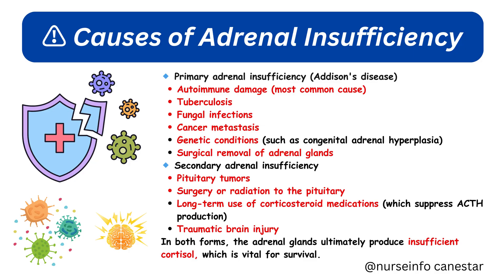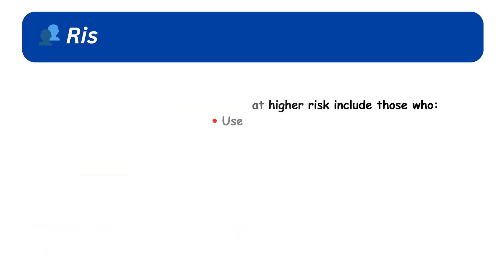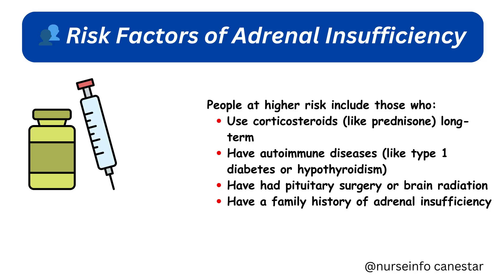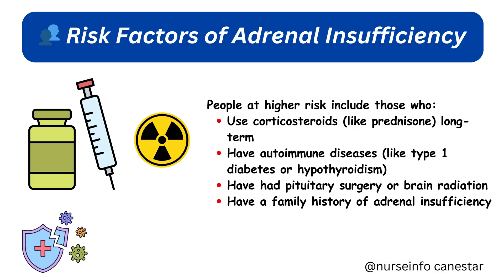People at higher risk of adrenal insufficiency include those who use corticosteroids like prednisone long-term, have autoimmune diseases like type 1 diabetes or hypothyroidism, have had pituitary surgery or brain radiation, or have a family history of adrenal insufficiency.